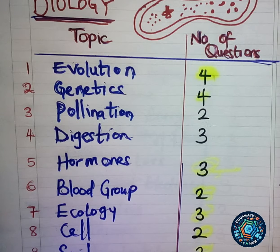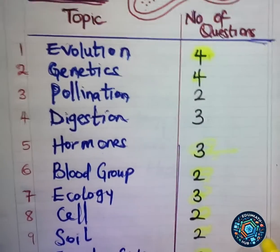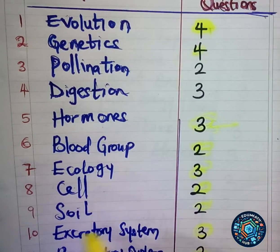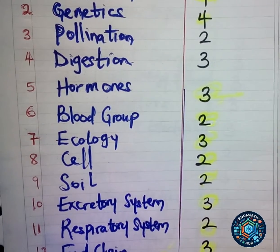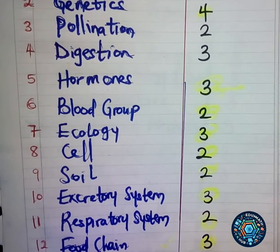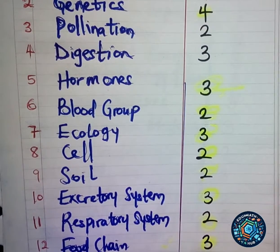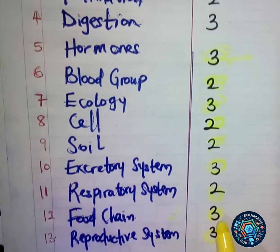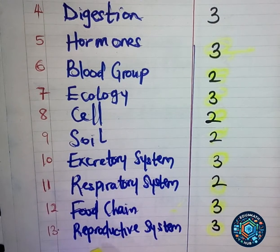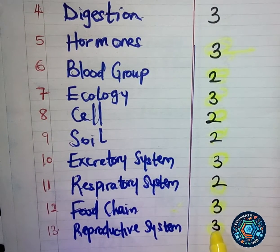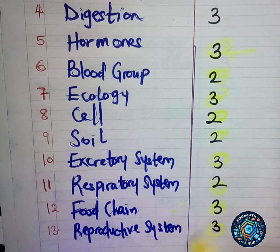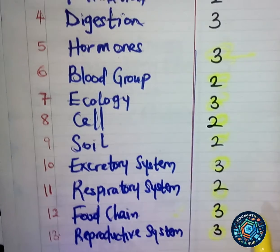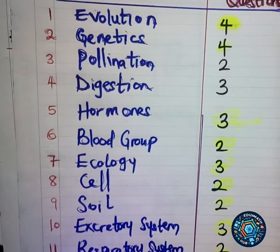Under ecology, three questions came out, talking about the different apparatus or devices used to measure ecological factors — you need to master that. Under cell, two questions. Respiratory system, two questions. Under food chain, three questions. Under reproductive system, three questions, including a question on the reproductive system of fungi such as mushrooms — you need to master those things.